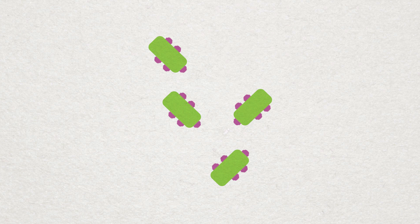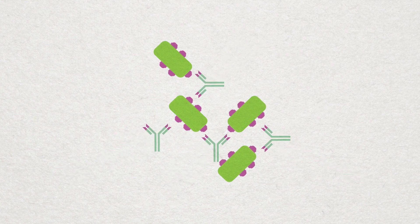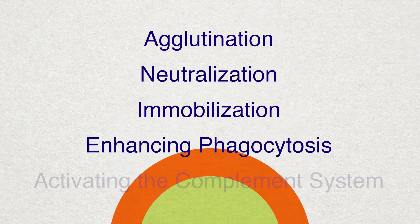The antibodies leave the lymph nodes or the spleen and circulate throughout the body humours. This is where they encounter many other antigens. The antibodies lock on and act in a variety of ways that ultimately leads to the death of the antigens.